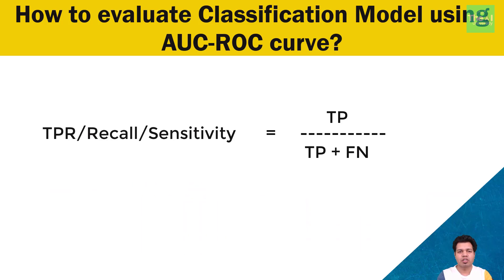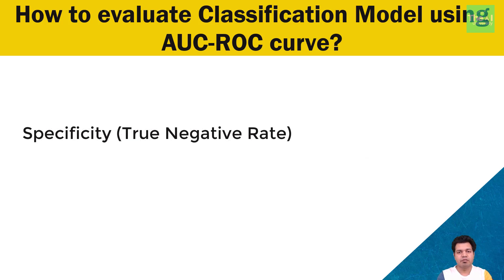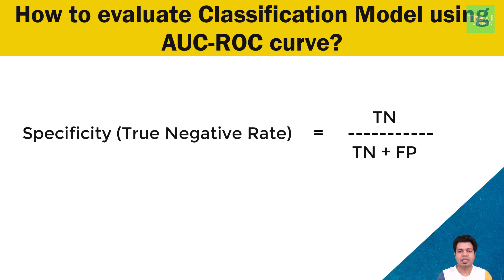In this video, I am going to cover false positive rate and specificity before moving ahead with AUC-ROC curve. Specificity, also known as the true negative rate, measures the proportion of actual negatives that are correctly identified as such. The formula of specificity is: True Negative divided by True Negative plus False Positive. Specificity tells how good our model is at identifying the negatives correctly. Please note that sensitivity and specificity are inversely proportional — when we increase sensitivity, specificity decreases, and vice versa.